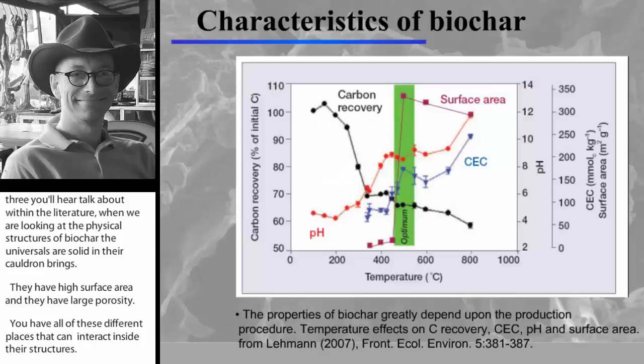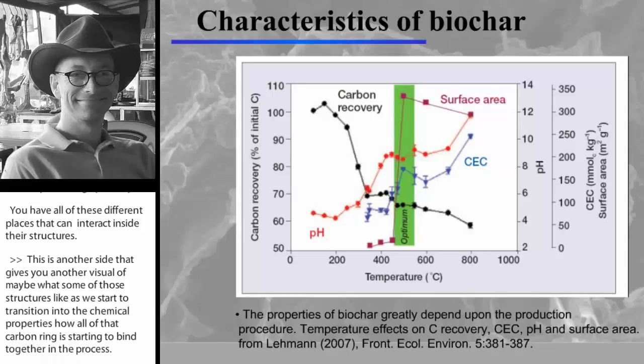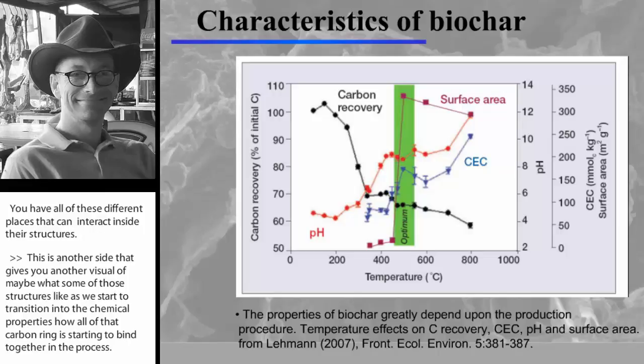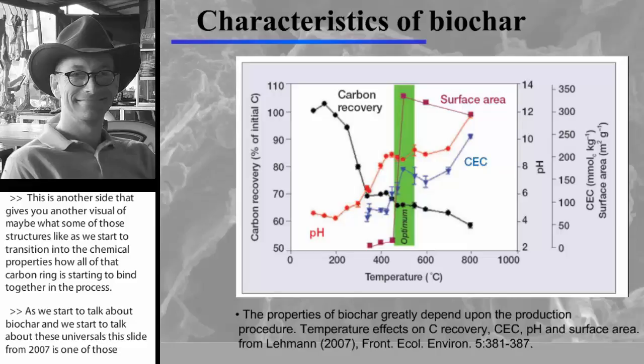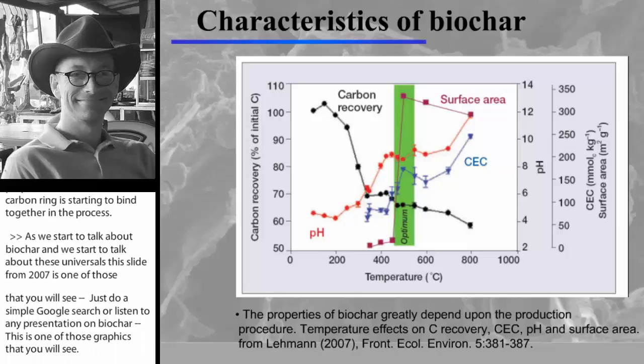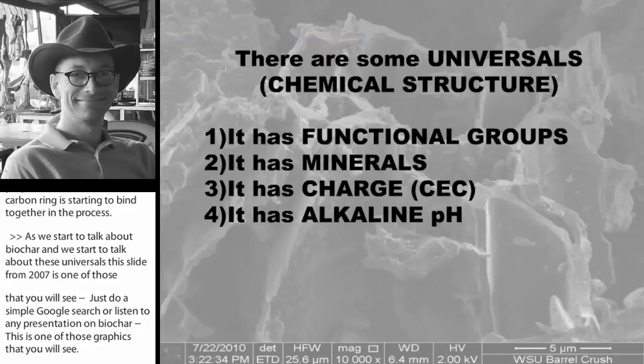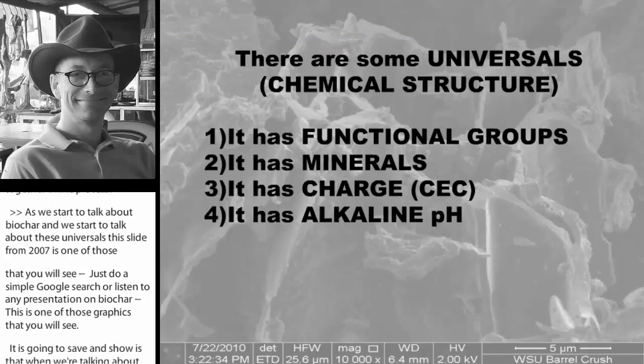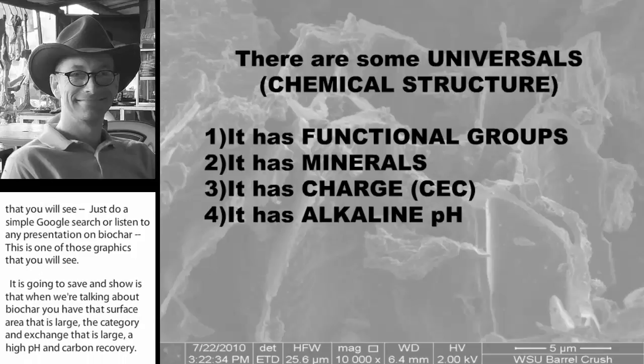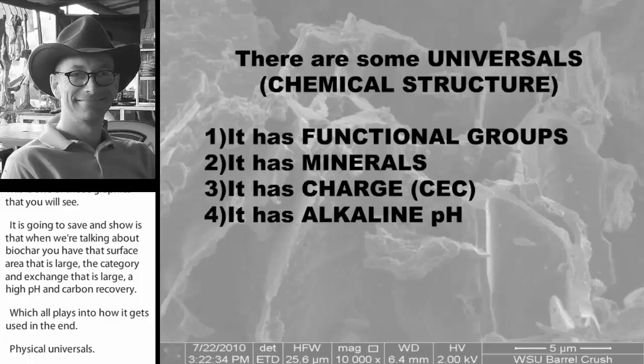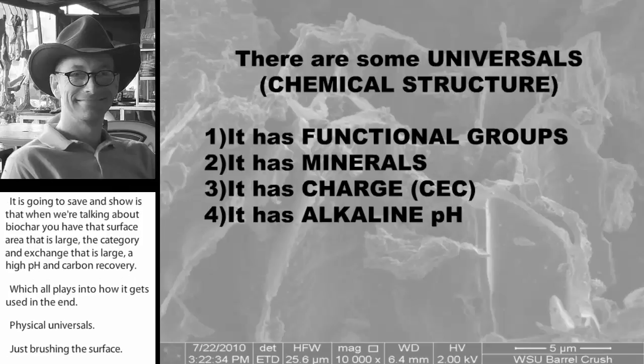As we start to talk about biochar and these universals, this slide by Lyman in 2007 is one of those that you'll see. You just do a simple Google search or you watch or listen to any presentation on biochar, this is one of those graphics that you're going to see. It's going to show us that when we're talking about biochar, you've got that surface area that's large, you've got a cation exchange that's large, you have a high pH, and you've got carbon recovery, which all plays into how it gets used in the end. Then we start looking at some of that chemical structure, some of those chemical properties that are universal.